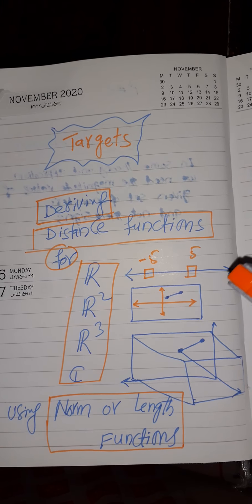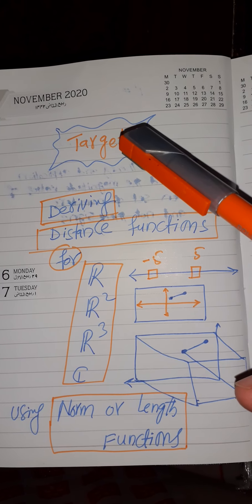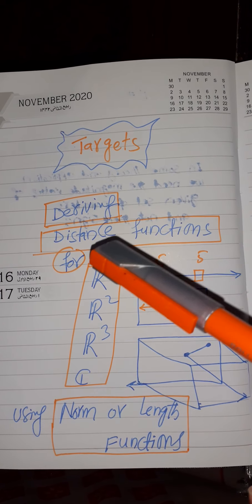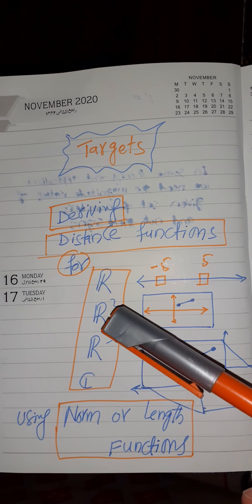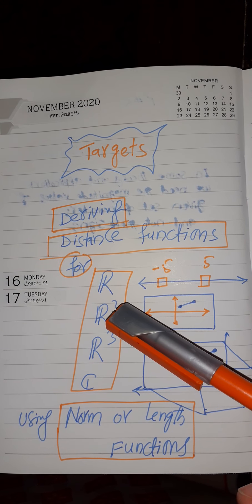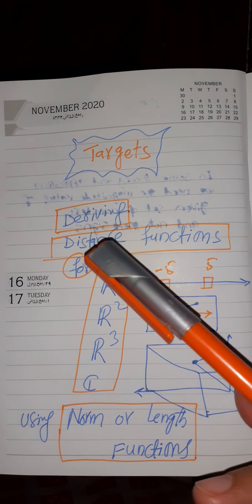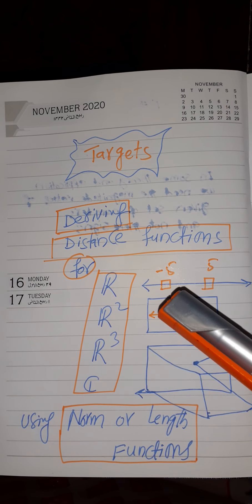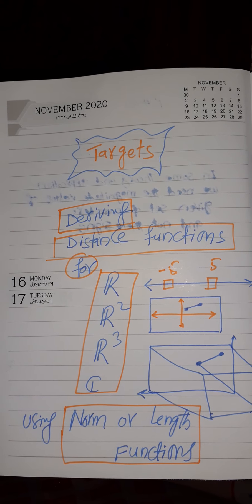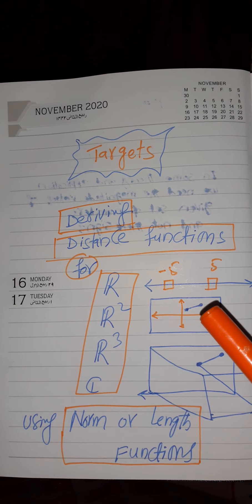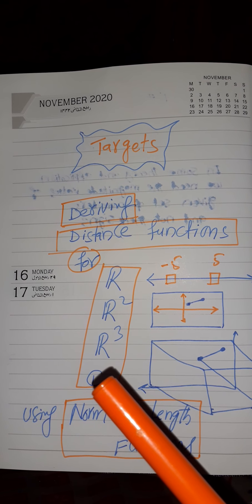Bismillah ar-Rahman ar-Rahim. Assalamu alaikum dear viewers. Today our target is to derive distance functions for real numbers, for ordered pairs, set of ordered pairs, ordered triples, and complex numbers. By distance function we mean a function which can calculate distance between any two real numbers, any two ordered pairs, any two ordered triples, and any two complex numbers.